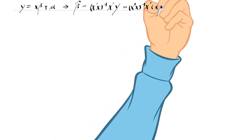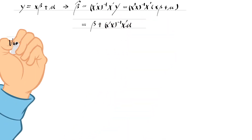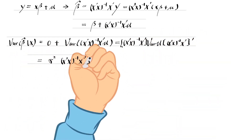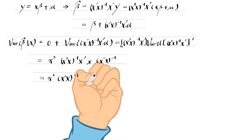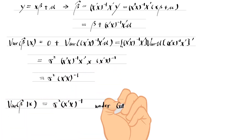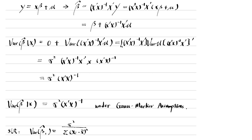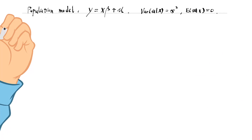We can write the variance of the OLS estimator beta hat in the matrix form. In the case of simple regression, when there is only one explanatory variable, we can write the variance of the slope estimate as follows. The greater the variation in x, the smaller the variance.